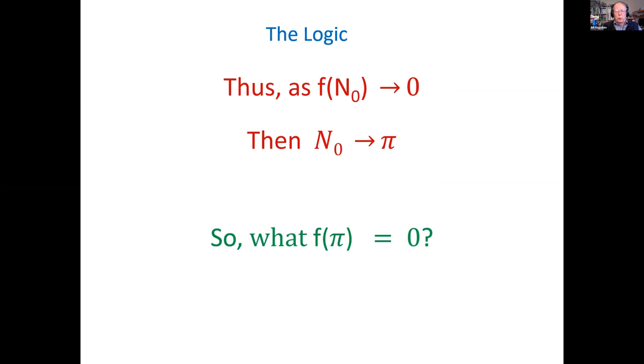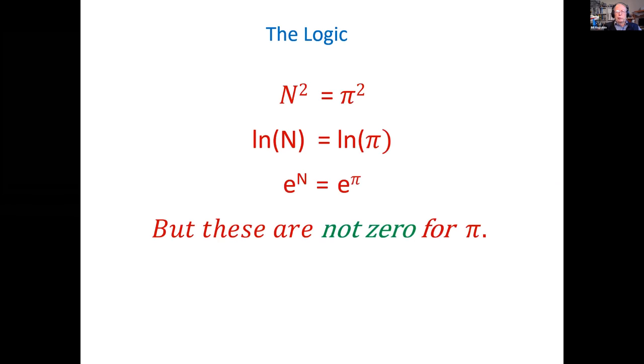Now, the next step is we need to find a function of pi that is zero. So put on your thinking hat, what function of pi is zero? Because as that function of pi approaches zero, we will get our answer. Well, at first I thought of maybe pi squared. Well, that's not zero. And then the log of pi, that's not zero. And e to the pi is certainly not zero.